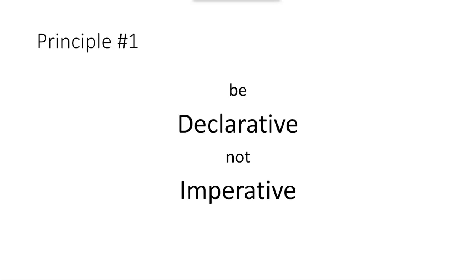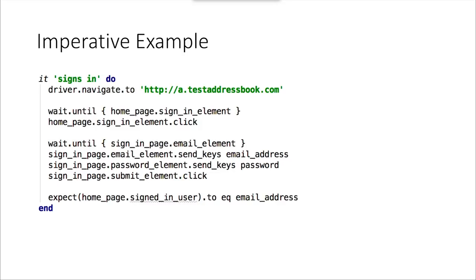First thing I want to talk about is imperative versus declarative. Here's an example of something imperative using a page object model. This is Ruby, so hopefully it's somewhat easy to read. The idea is you're specifying all the things you're doing — referencing a driver with methods on the driver, calling a page object to get an element back, taking an actual click on that element, doing a specific wait, sending exact data values, passing those in.